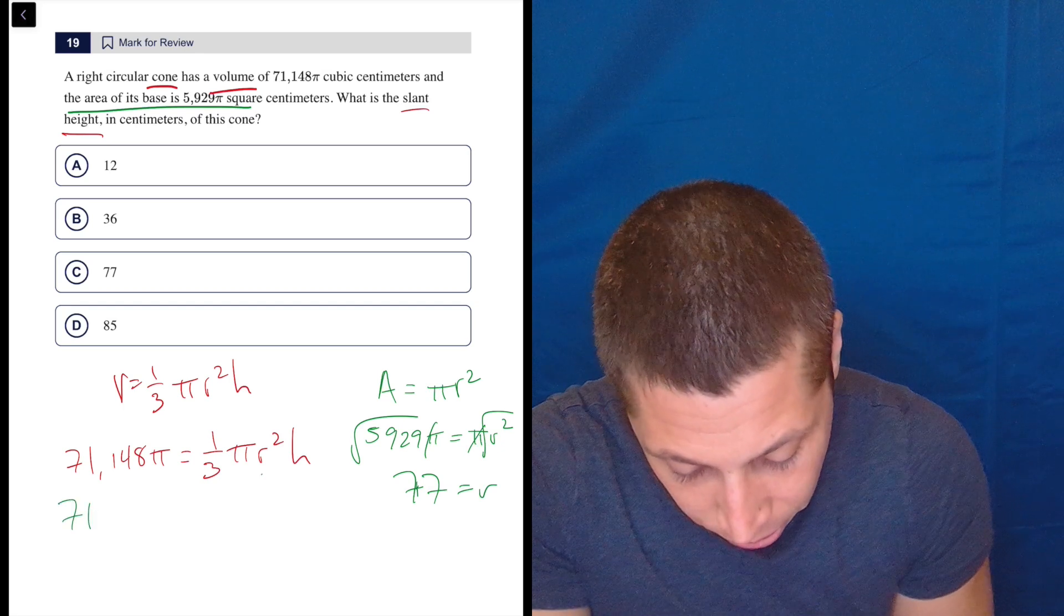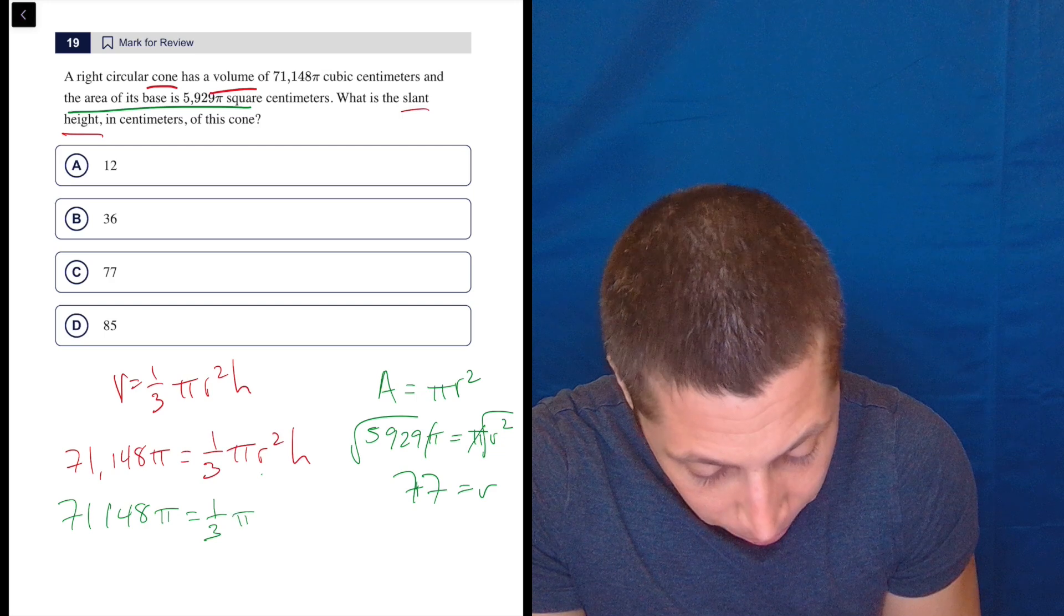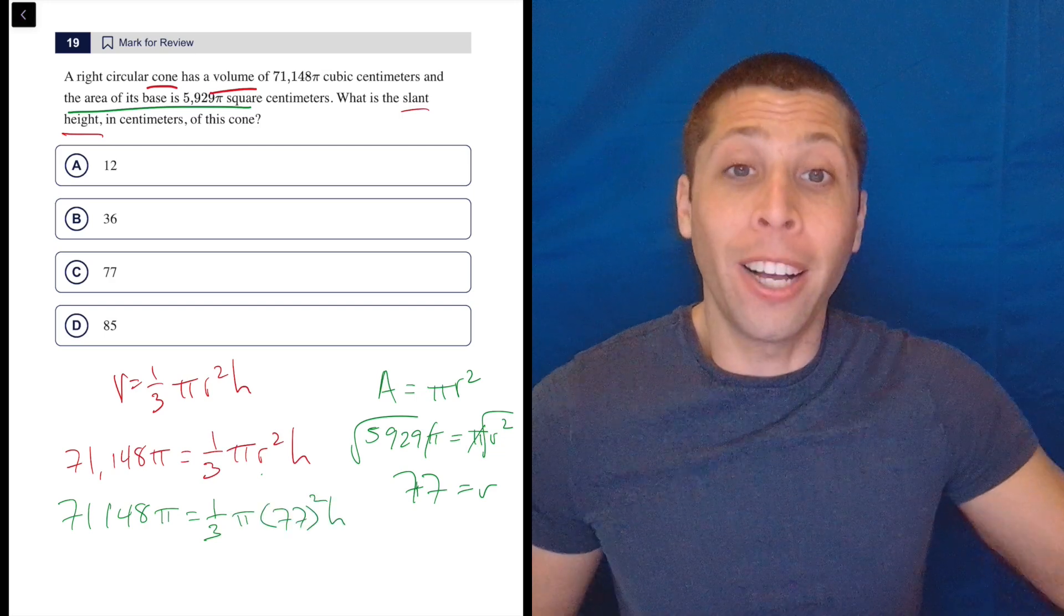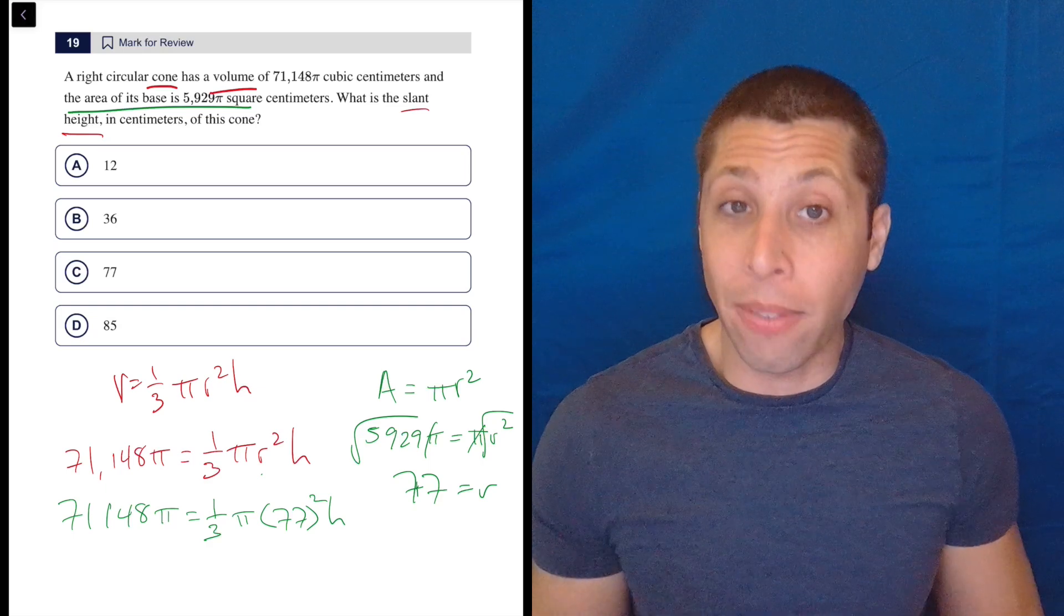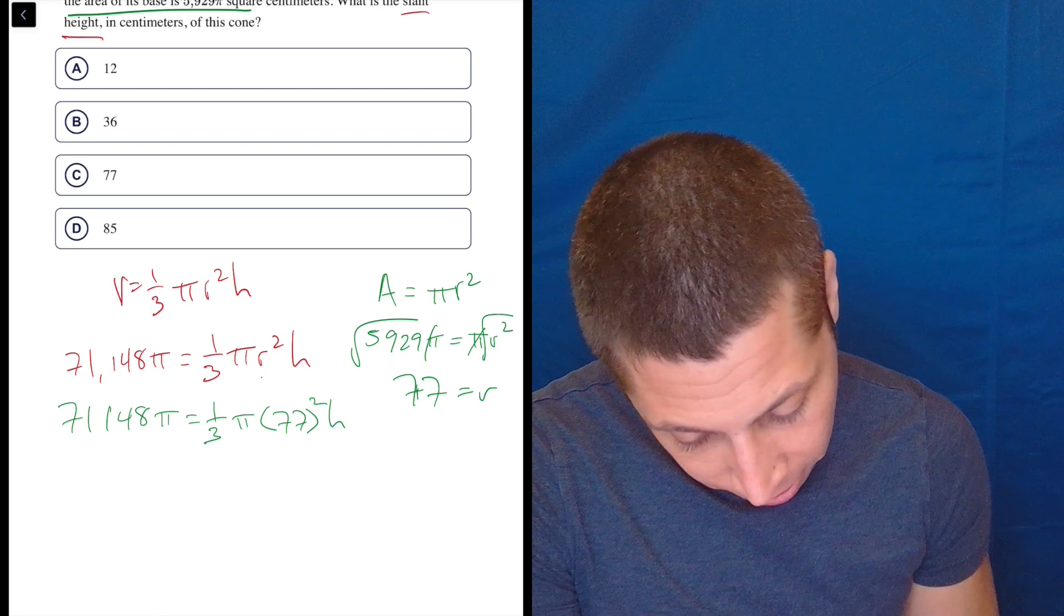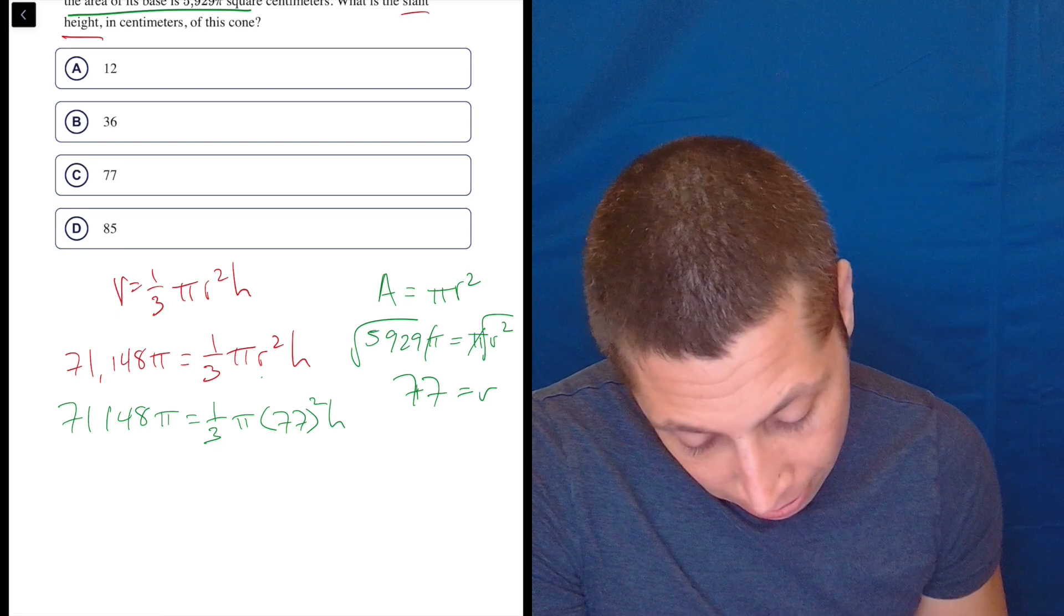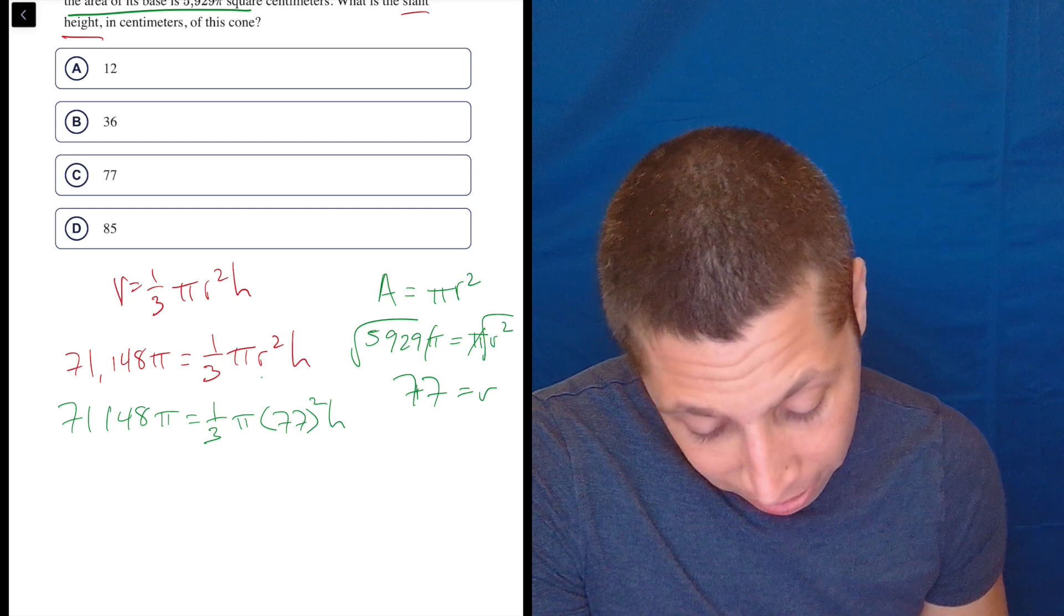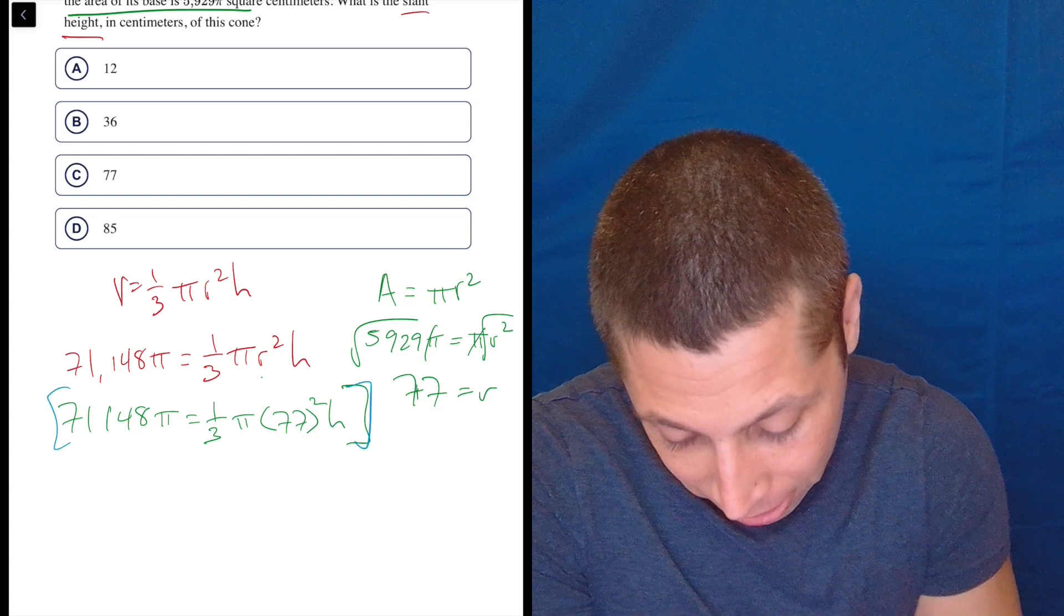So I can plug that in right there. So 71,148 pi equals one third pi 77 squared h. So I am going to solve for a height. It is not the final height, but it looks like just based on what they gave me, I've got to find that along the way. Okay, this is kind of where it gets messy, depending on how you want to deal with that fraction. Let's do 77. Is that a prime number? No, but it doesn't have threes in it. So let's get rid of that third first. That's going to be annoying.